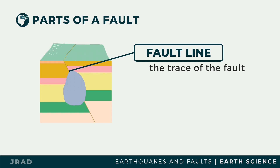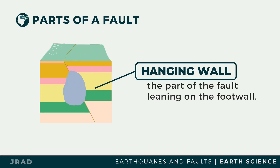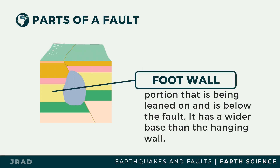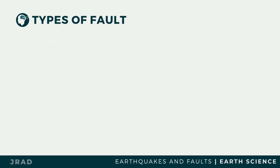Fault cuts through rocks forming two blocks, which may be classified as either the hanging wall or the foot wall. The hanging wall is the part of the fault that is leaning on the foot wall — it is the portion immediately above the fault. The foot wall is the portion that is being leaned on and is the surface below the fault. It has a relatively wider base compared to the hanging wall. The arrangement of these parts varies with the movements of the ground during an earthquake.